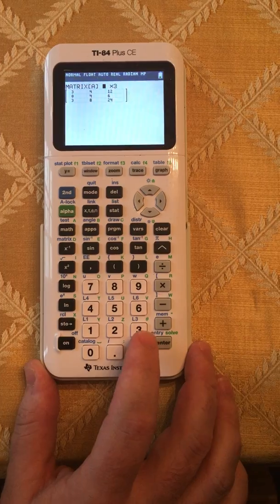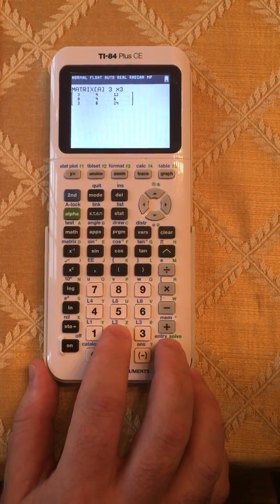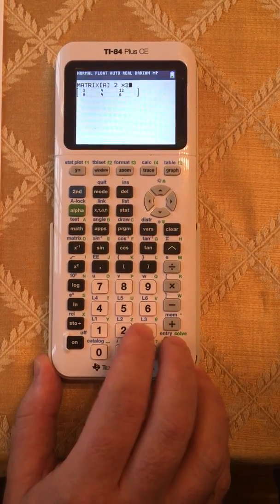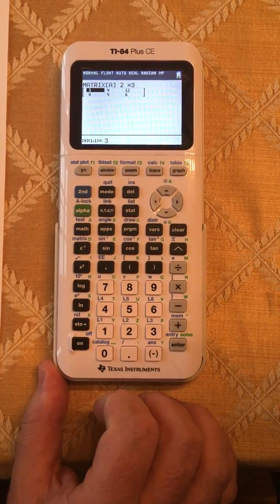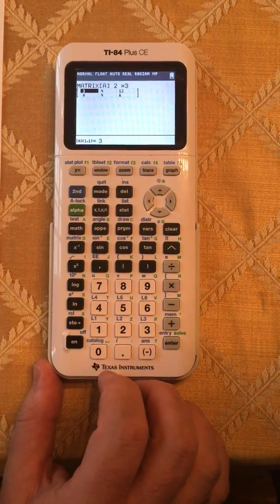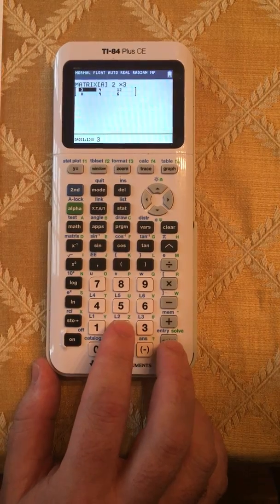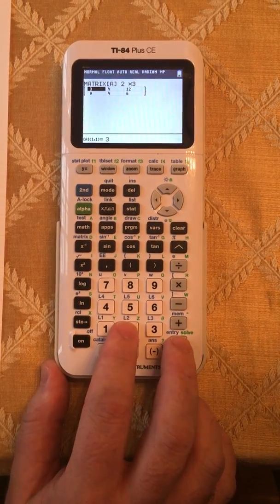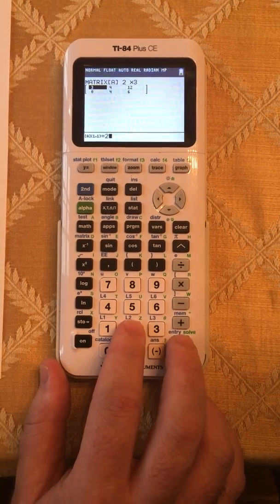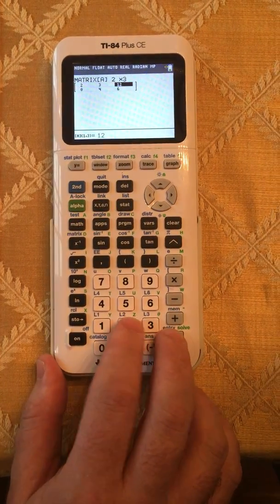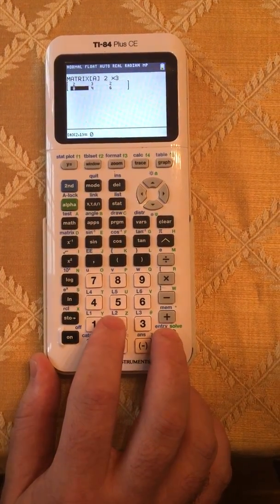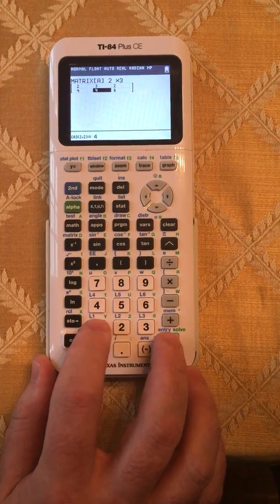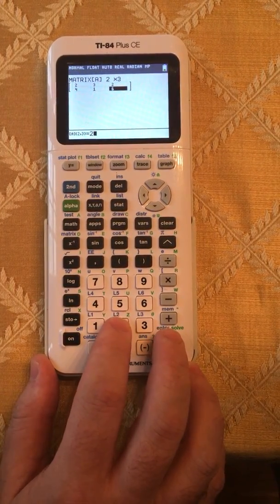Whatever size matrix you need, in this case 2 by 3, you hit 2 enter 3 enter and it will automatically resize. Then you simply page through the cells by hitting the number then enter and it automatically advances. So in this case, the first row: 2 enter 3 enter 2 enter 4 enter 1 enter 2 enter.